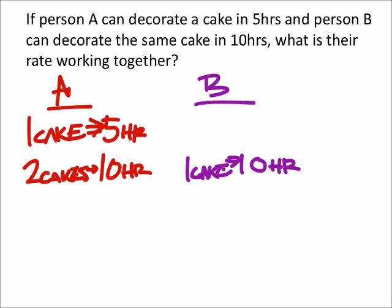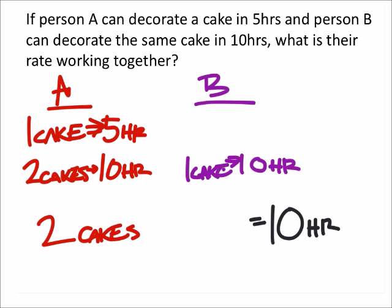So if we looked at this in 10 hours, we have person A who could complete by themselves two cakes. On the other hand, we have person B who could finish in 10 hours one cake. So when we add those two together, we know how many cakes we have from both people in 10 hours, and that would be three cakes.